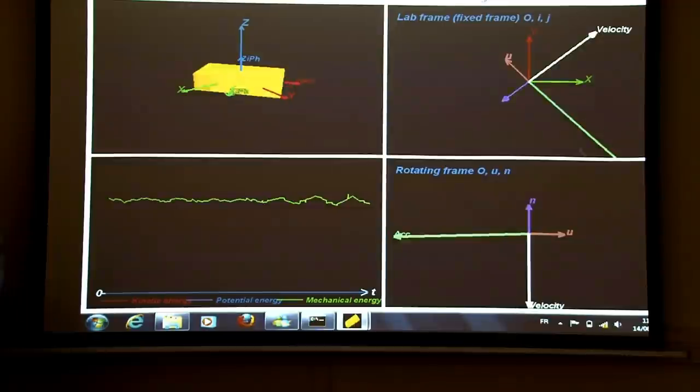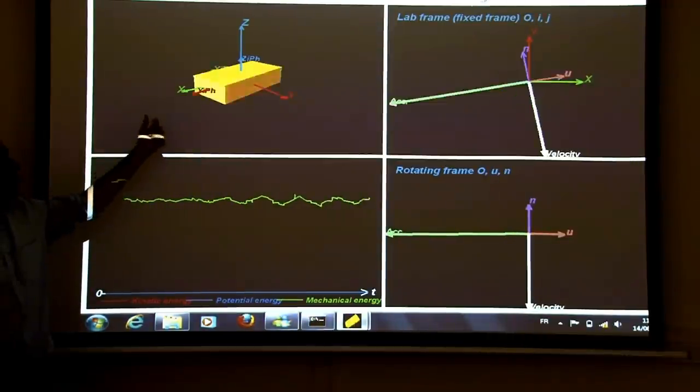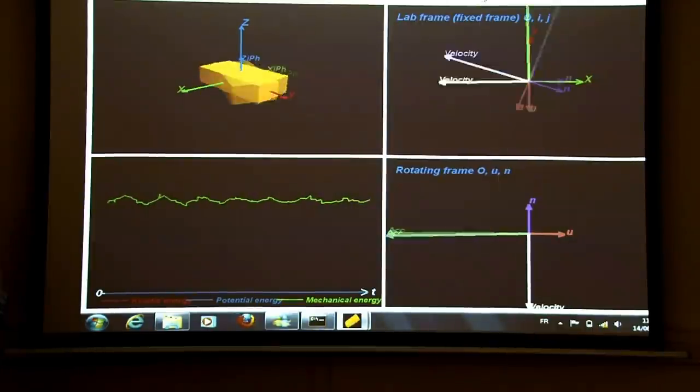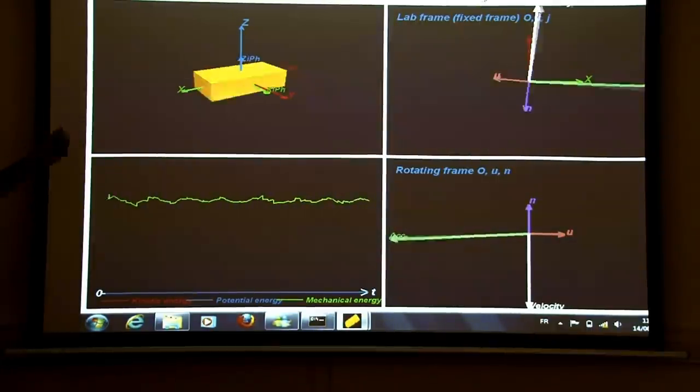For the sensors, essentially what the iPhone is doing is one rotation during the time the turntable is doing one period. That's the first thing.